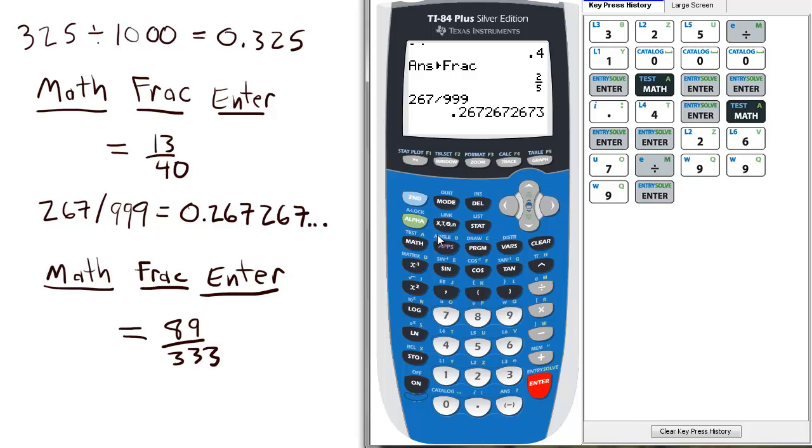To convert it to a fraction of lowest terms, just press MATH, and then basically ENTER, ENTER. And there you go. 0.267 repeating as a fraction in lowest terms is 89 over 333.